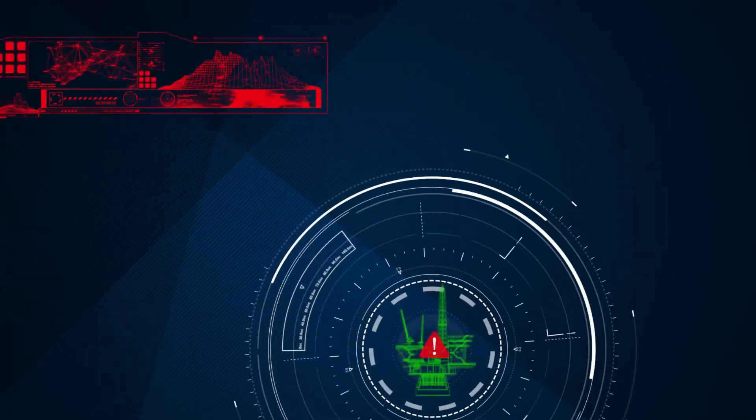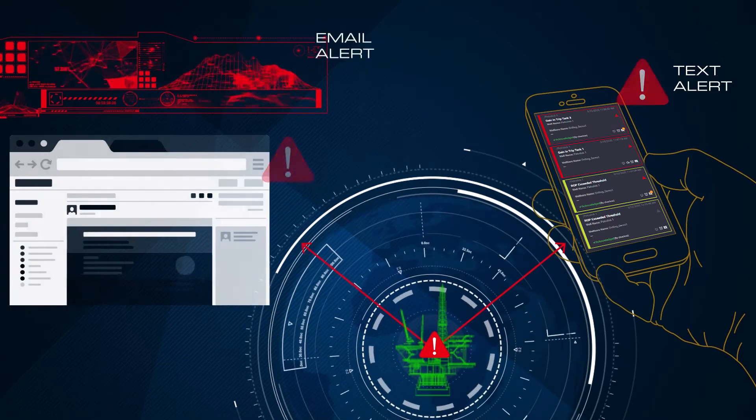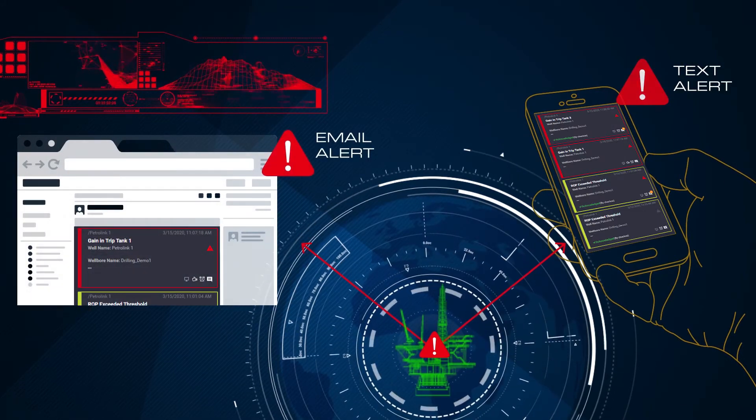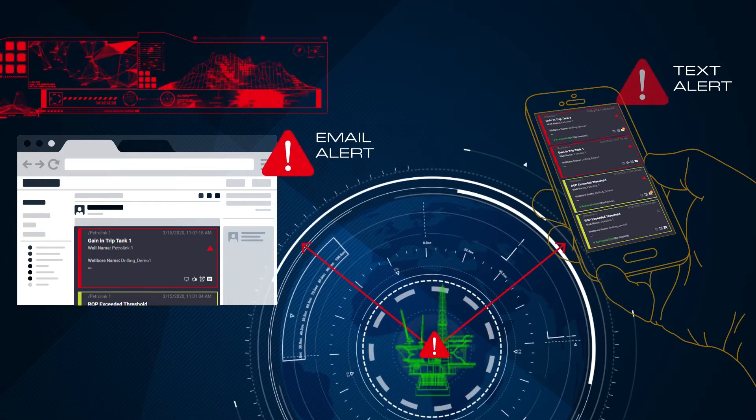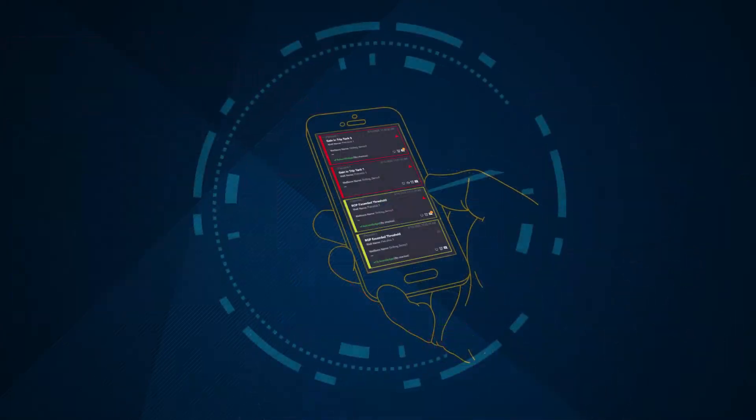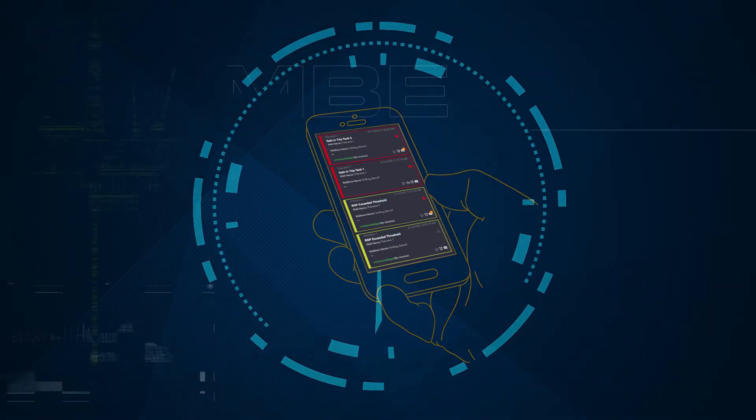We all know that the oil and gas industry is a mobile 24-7 business. That's why, in addition to the on-screen notifications, the MBE system can send text and email messages, allowing key personnel to continue their routines outside of the office while they are away from the computer.